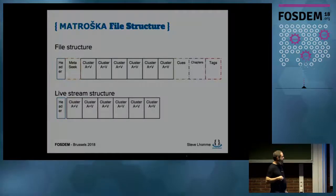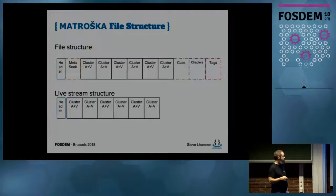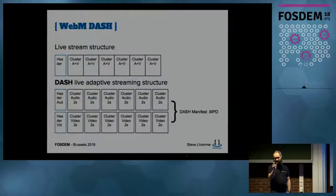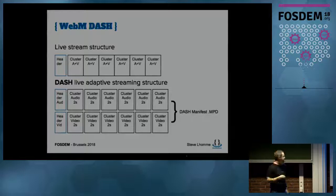In streaming you don't have a lot of these parts — you only have the header and the clusters. The meta-seek is useless since you're not going to seek during live streaming. Cues are useless too. You can't introduce chapters for the same reason. The only section that could be used is tags, placed before the actual data. WebM is actually exactly the same as Matroska — it just says 'webm' instead of 'matroska' at the beginning, with some features removed. It's basically a Matroska profile.